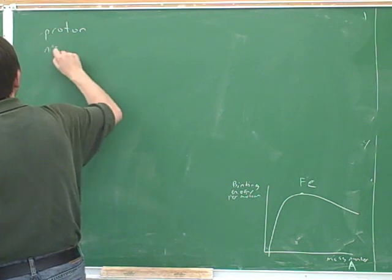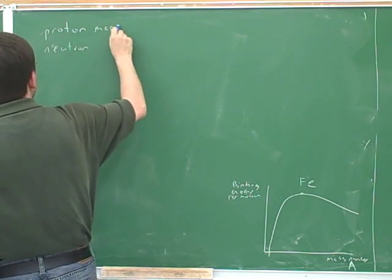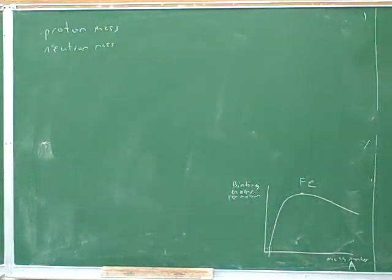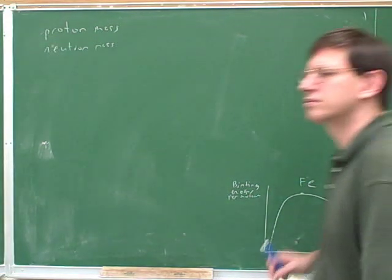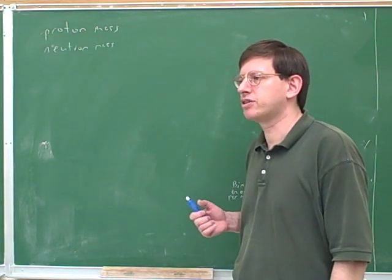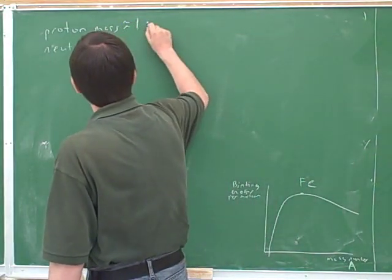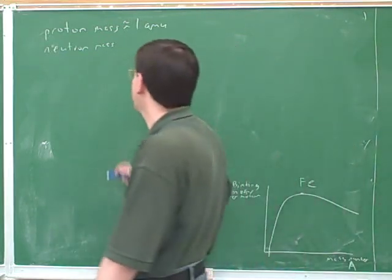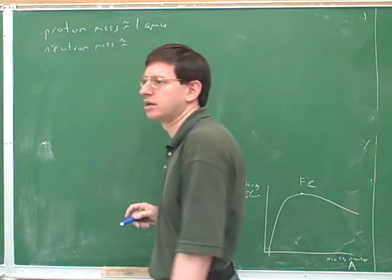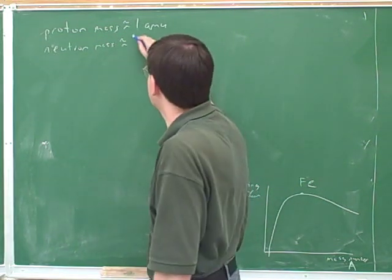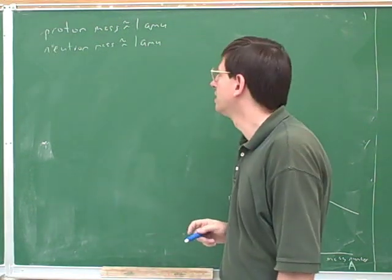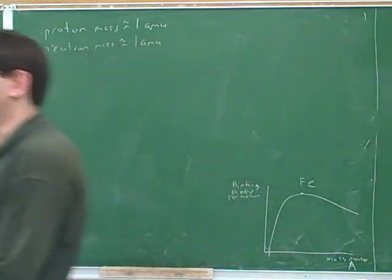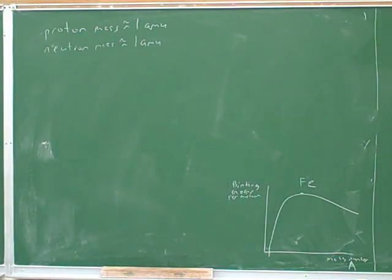What is the mass of a proton? The proton is 1.67 times 10 to the negative 27 kilograms. We have to think about that in terms of units — it's approximately one atomic mass unit, which is the unit we're commonly using in this chapter. In atomic mass units, the mass of a neutron is very similar, so approximately one, although they're not exactly the same. You may need to convert these into kilograms, so find that conversion in the back cover of your book.